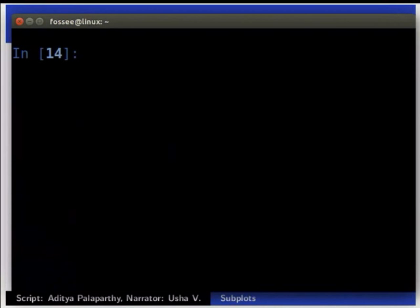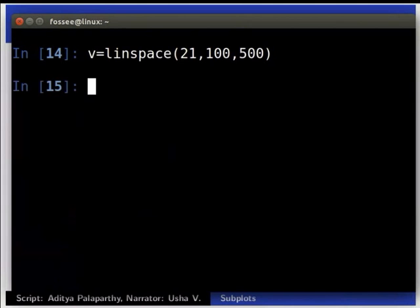To start with, we have been given the range of volume from which we can define the variable V. V is equal to linspace inside brackets 21 comma 100 comma 500.